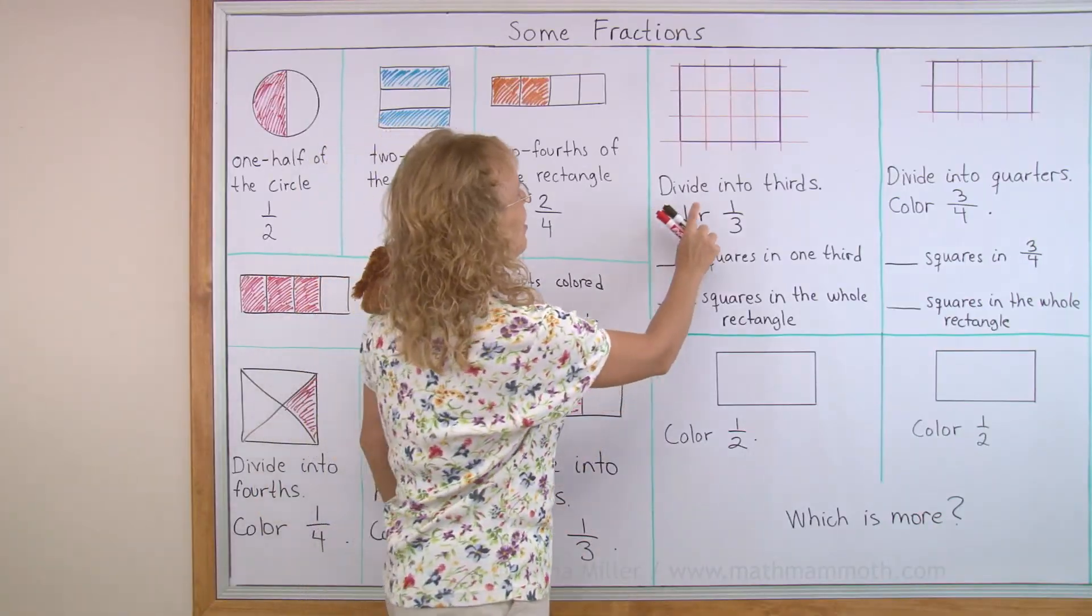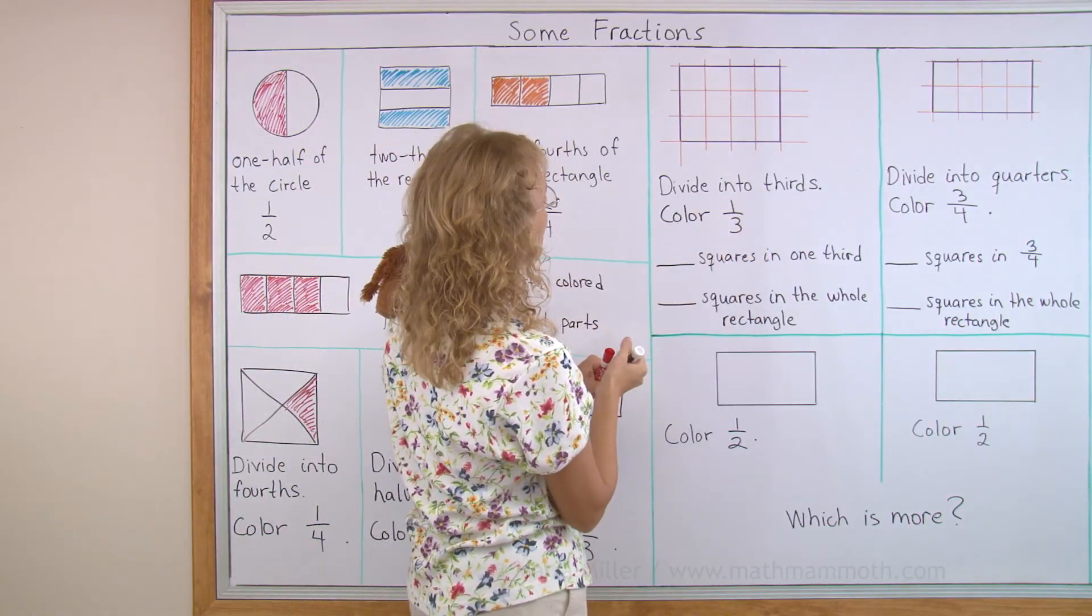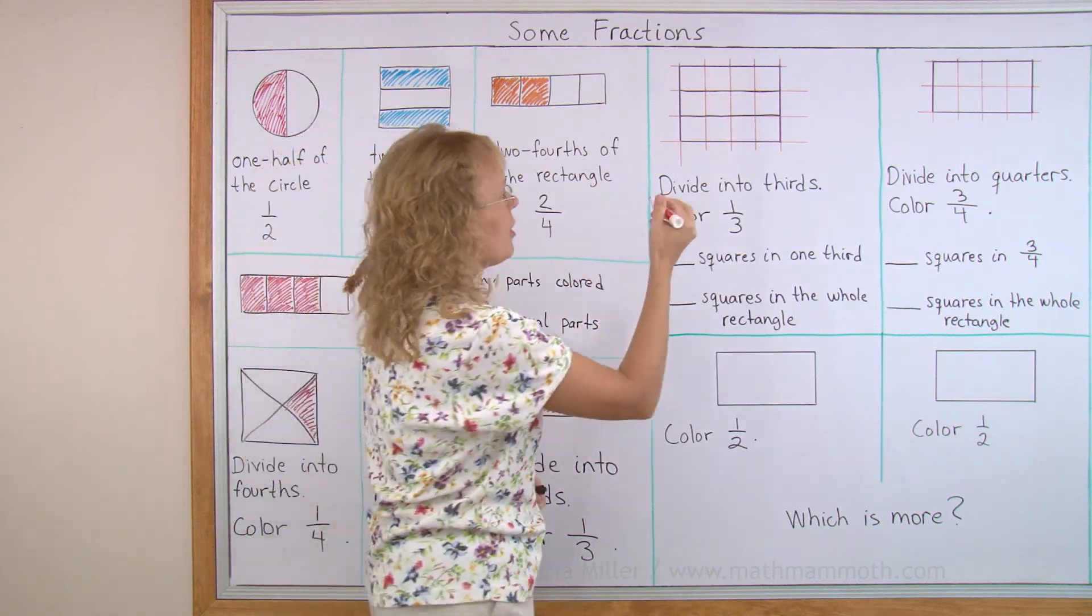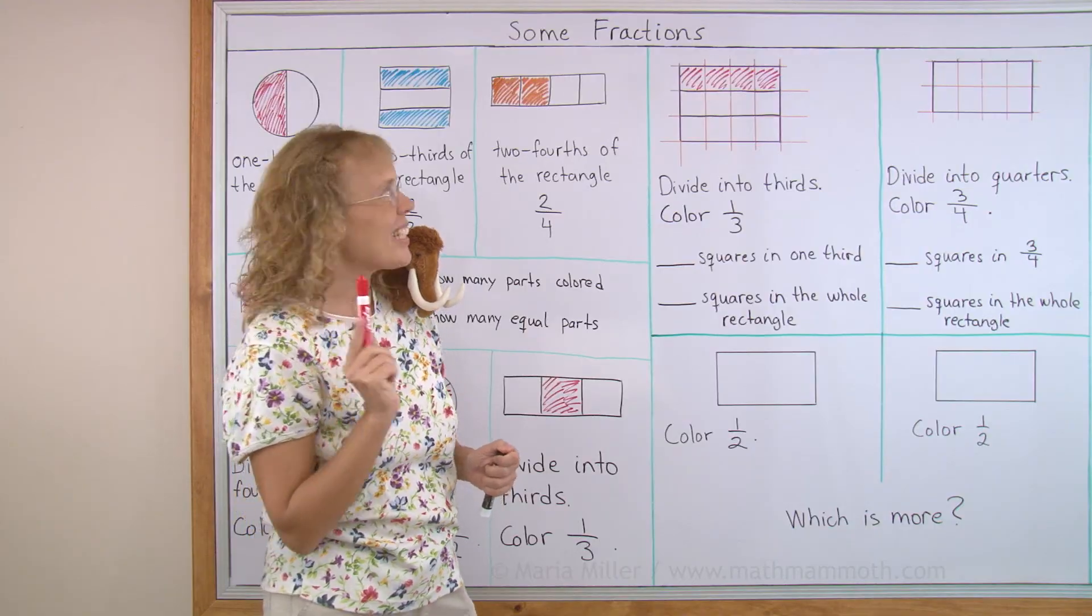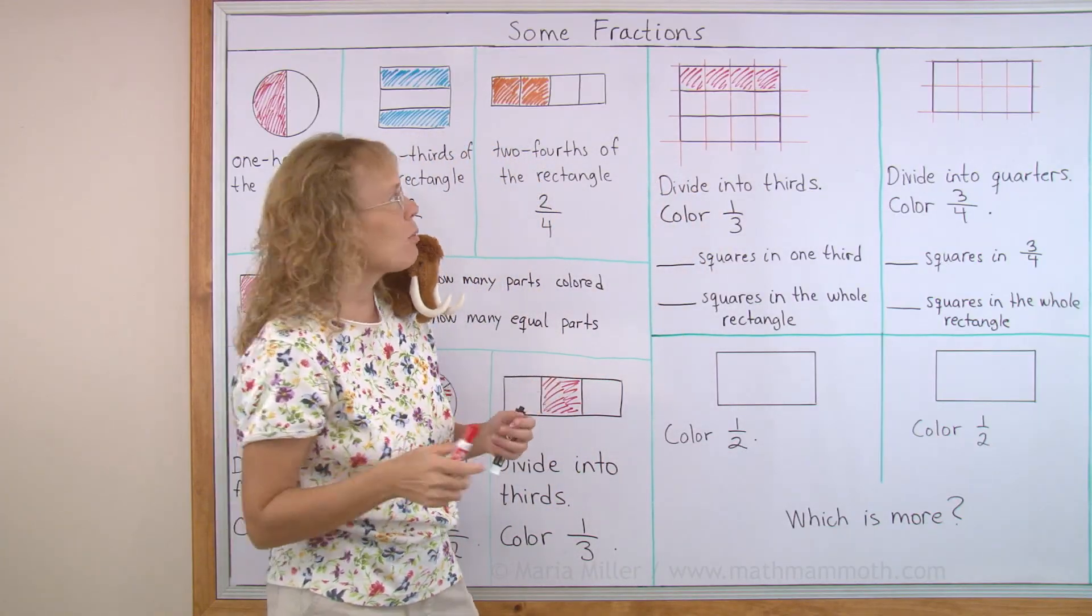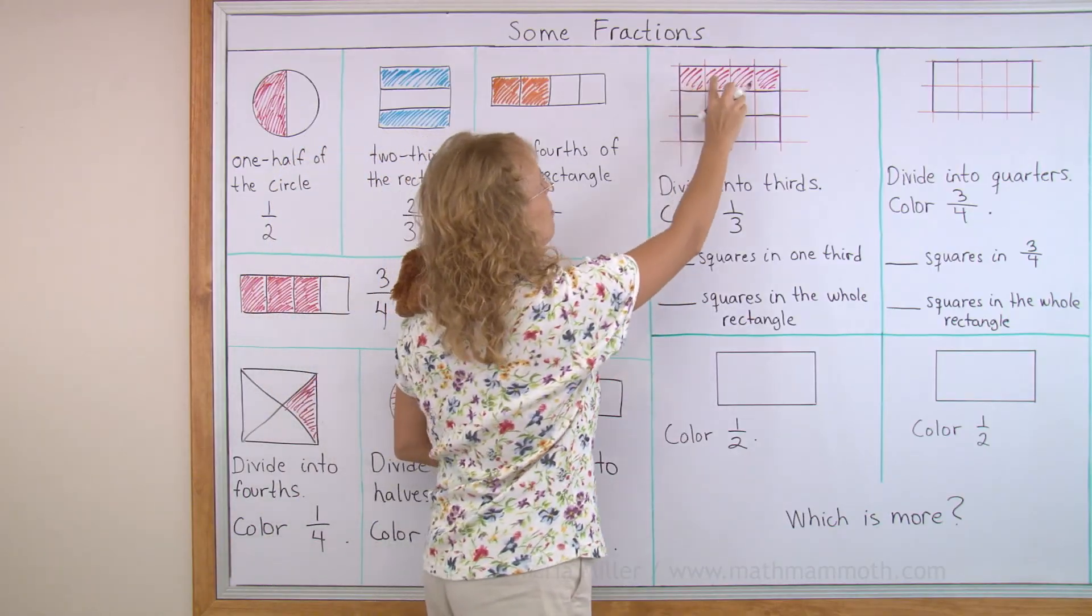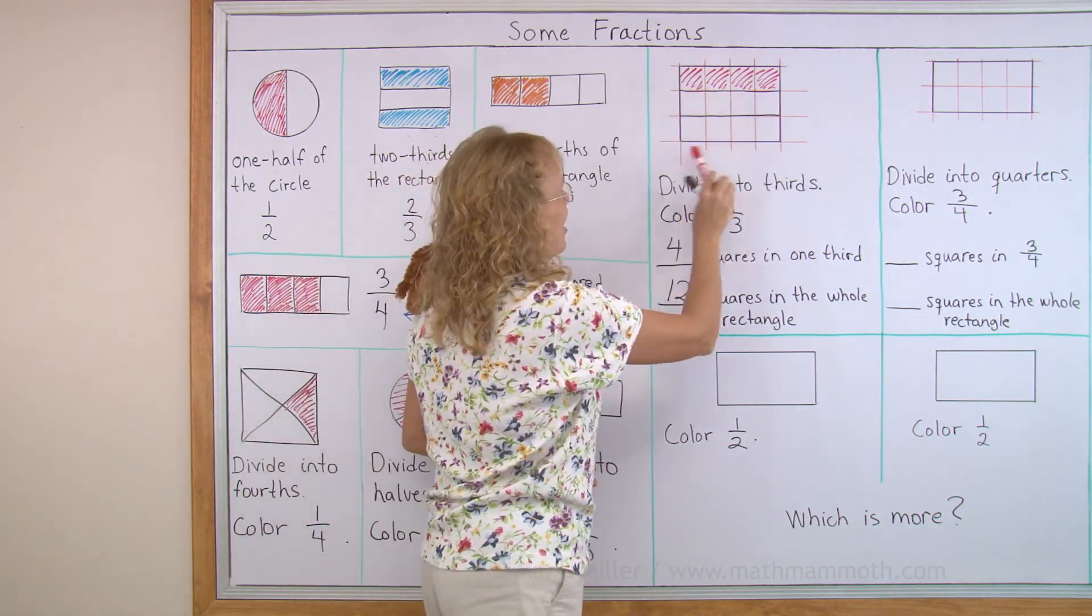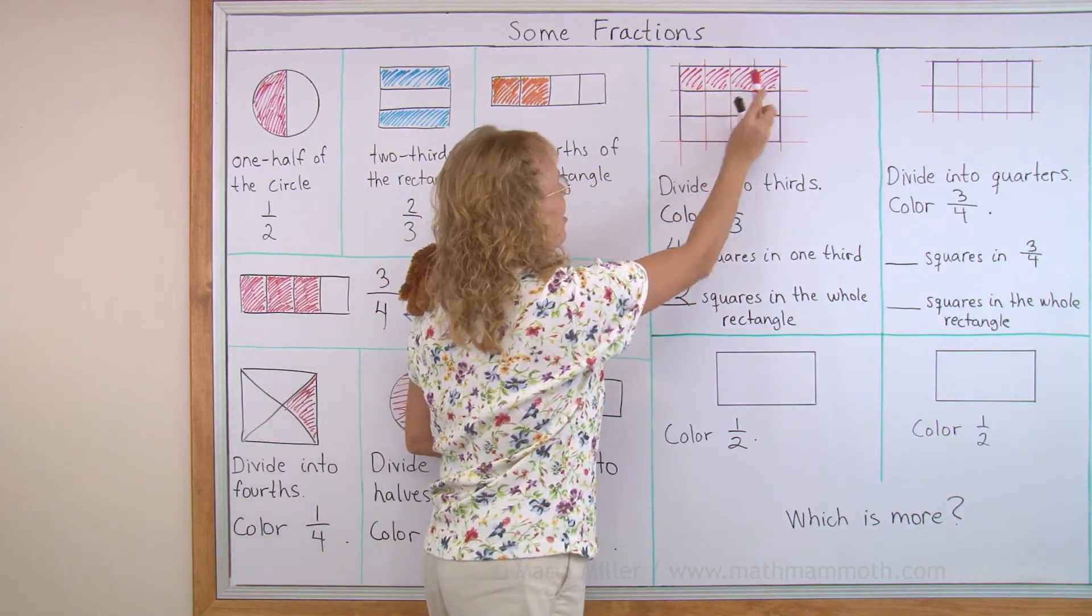Over here is something a little bit different. Divide this rectangle here into thirds, or three equal parts, and then color one third. Three equal parts, I'll divide it. And then I color one third. But now we're going to look at those little squares inside it. This whole rectangle is made of little squares. And I'm going to count, there's one, two, three, four little squares in that one third that I colored. And then four, five, six, seven, eight, nine, ten, eleven, twelve squares in the whole rectangle.